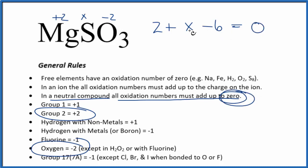That means x minus 4 equals 0, x equals 4. So the oxidation number on sulfur will be plus 4.